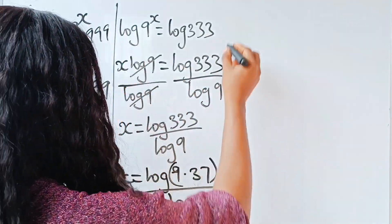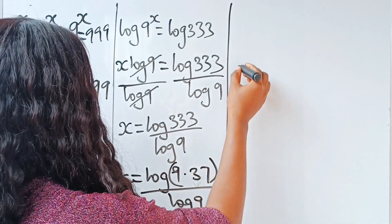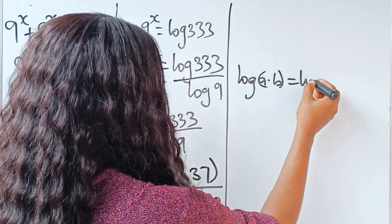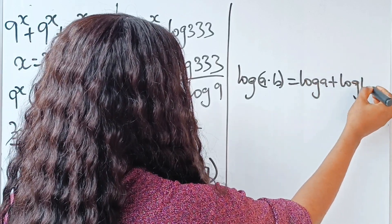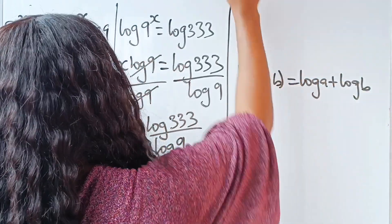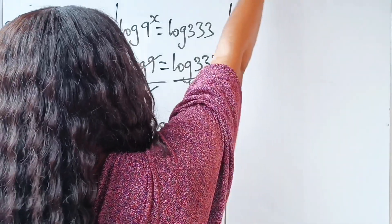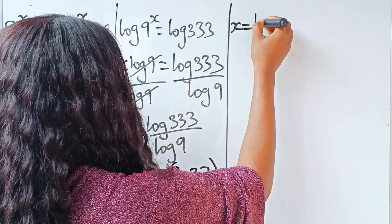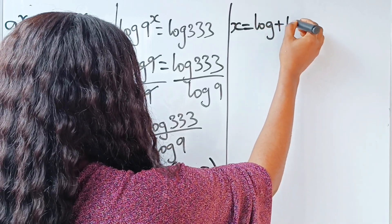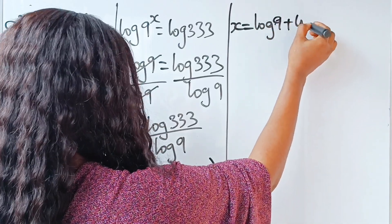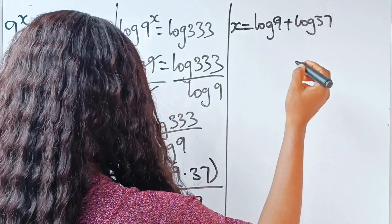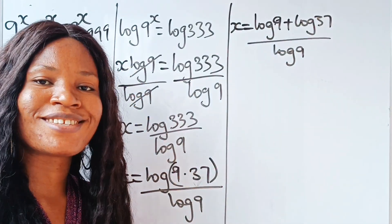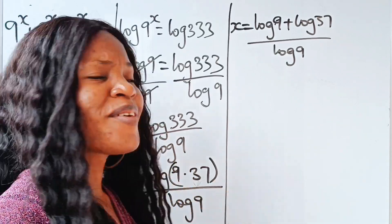We are going to apply another law of logarithms: log(a × b) = log a + log b. So we are going to expand that and we get x = (log 9 + log 37) divided by log 9.